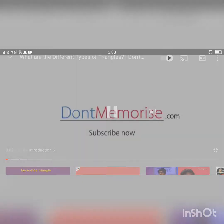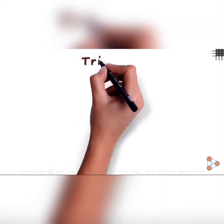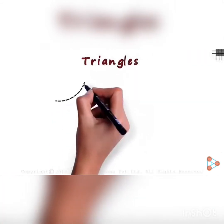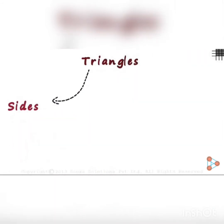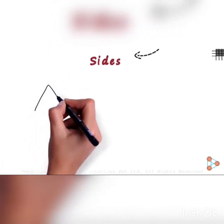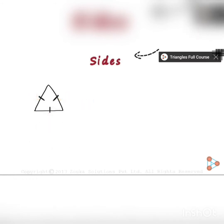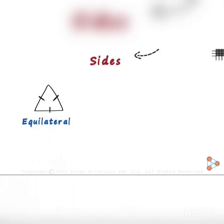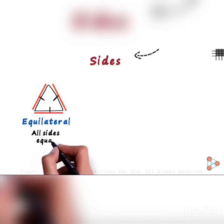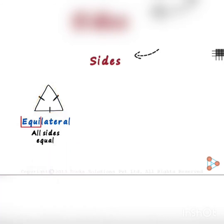Good morning students. Today we are going to start with triangles — the types of triangles. We will differentiate by sides, so according to sides there are three types of triangle. First, if a triangle has three sides equal, such triangles are called equilateral triangles. All sides are equal, as you can see — this is an equilateral triangle.